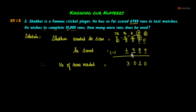So, if we have 0 in the ones place, it gives 0. Therefore, the number of runs needed is equal to 3,020 runs.